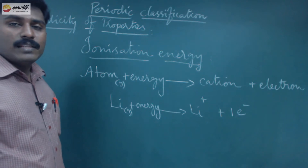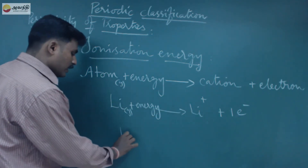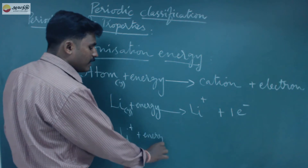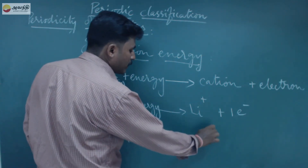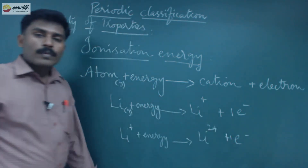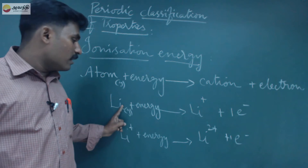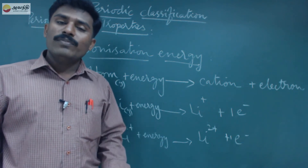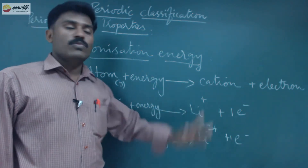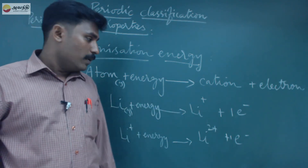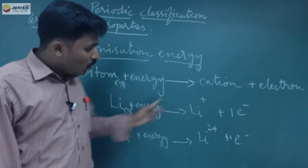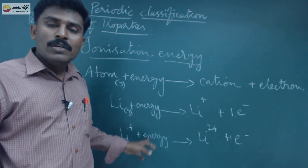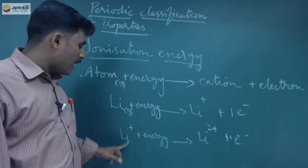What is the second ionization energy? From lithium plus (Li+), you are going to remove one more electron. The energy required for that is called the second ionization energy. So Li+ becomes Li2+. The energy required to remove one electron from a neutral gaseous isolated atom is the first ionization energy; during the first ionization energy, the neutral atom becomes a positive charge. From the positive charge, you remove one more electron — that energy is called the second ionization energy. During the second ionization energy, the cation becomes 2+.